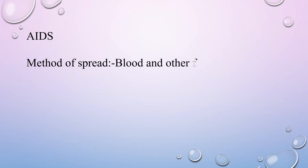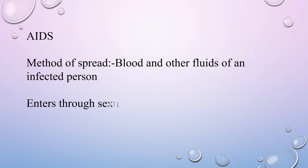The next virus disease is AIDS. It spreads through blood and other fluids of an infected person — including semen, breast milk, and vaginal fluids. The pathogen enters the body through sexual contact or blood transfusion.